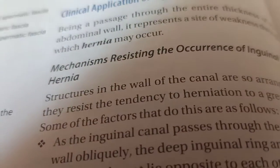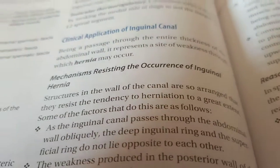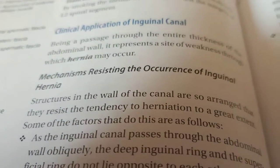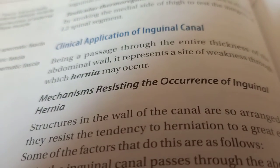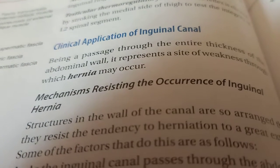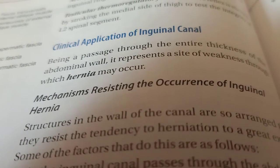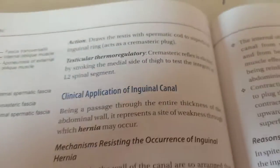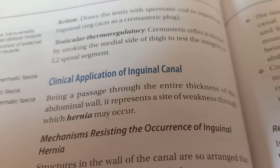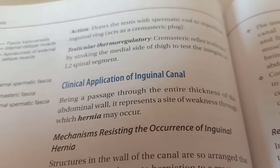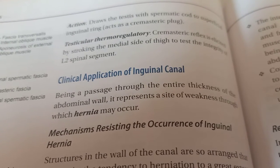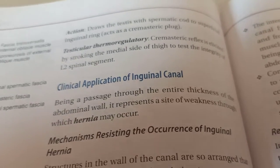First we will see the clinical application of the inguinal canal. It is a canal, so any abdominal content can easily come out through it. Whenever there is outpouring of the contents of the abdomen through this canal, the condition is known as hernia. What are the mechanisms which keep the inguinal canal in a proper, strengthened position so that hernia does not occur?